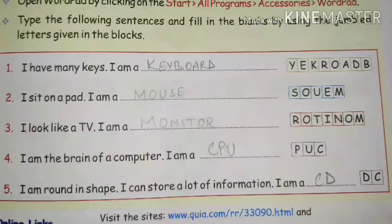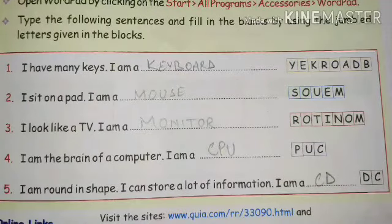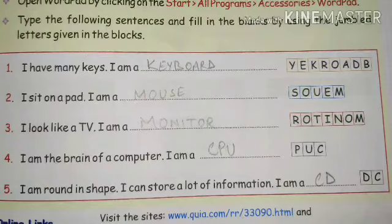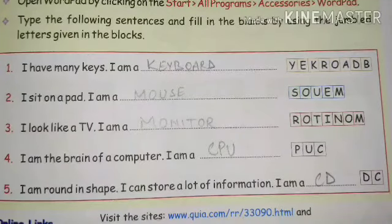Second: 'I sit on a pad, I am a mouse' — m-o-u-s-e. Third: 'I look like a TV, I am a monitor.' Fourth: 'I am the brain of a computer, I am a CPU.' Fifth: 'I am round in shape, I can store a lot of information, I am a CD.' These five you have to do — it's easy!